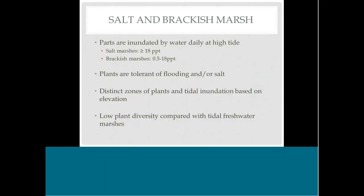Salt and brackish marshes have a lot of similarities. The main difference is salinity: salt marshes have salinity of 18 parts per thousand or more, whereas brackish marshes range widely from 0.5 to 18 parts per thousand. Parts of both marsh types are inundated by water every single day at high tide. The plants that live there are very tolerant of flooding and saltwater, and there are very distinctive zones of plants based on elevation within the marsh.